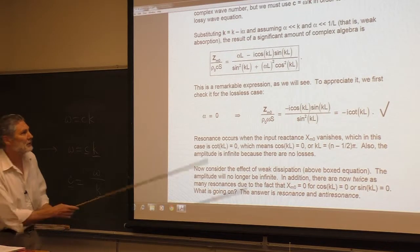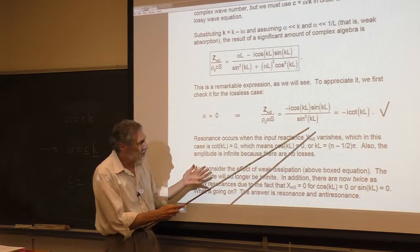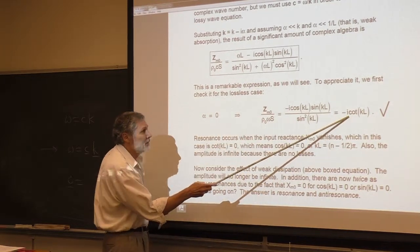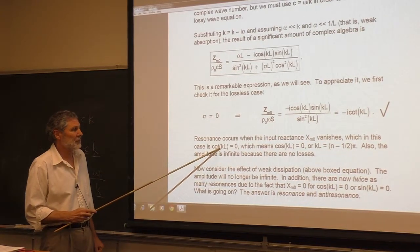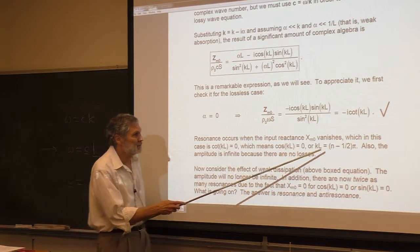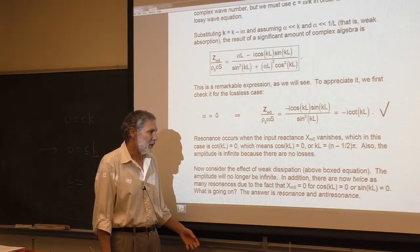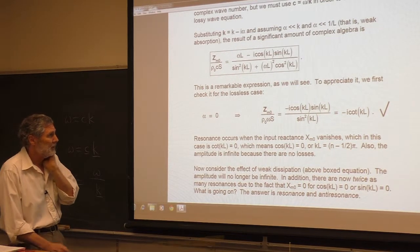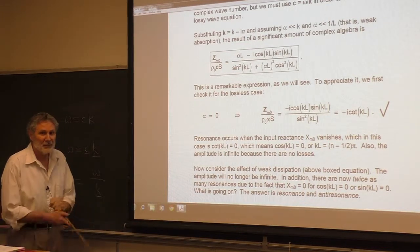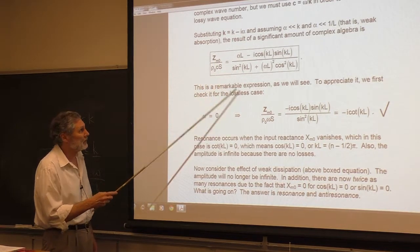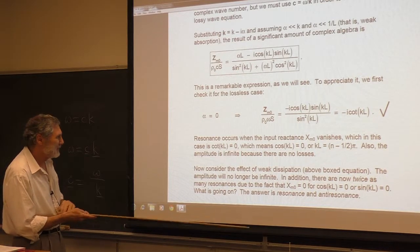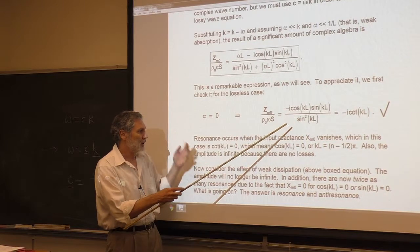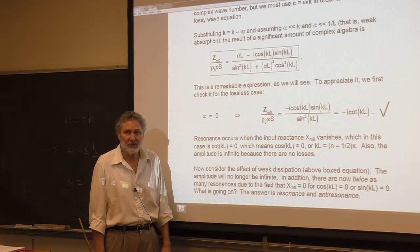Now let's look at this expression. Resonance is the vanishing of the reactance. In this case, because there are no losses, it's purely reactive. When the reactance vanishes, we get the cotangent of KL equals zero, which means the cosine of KL equals zero. So we have these half-integral values of KL — π/2, 3π/2, etc. — as we've seen before. And when alpha equals zero, on resonance, the amplitude will be infinite because we have no dissipation.